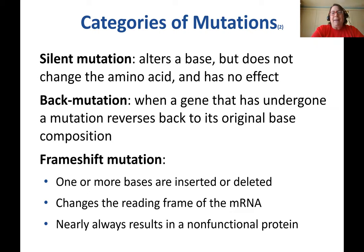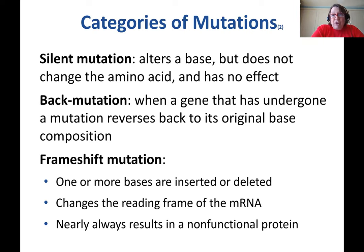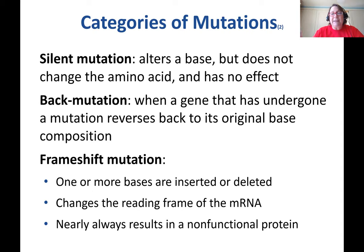A back mutation actually reverses or reverts to the original base composition — you have a mutation at one point and then it mutates back. A frame shift mutation is often really devastating. One or more bases are inserted or deleted, so everything past that point in the genetic code codes for completely different codons and completely different amino acids. It nearly always results in a non-functional protein, unless it's very late in the protein sequence — and even then it can completely throw the protein off.